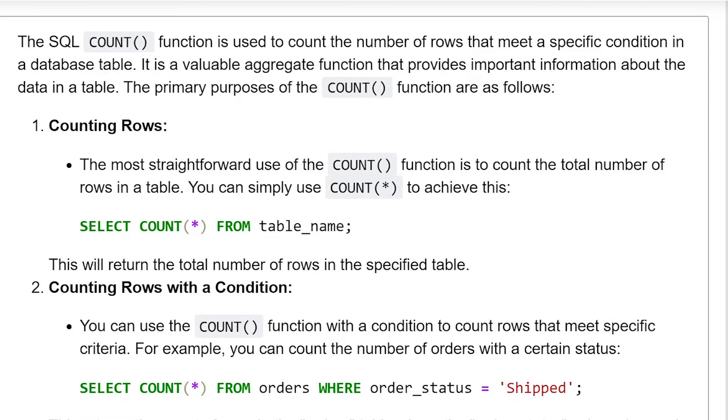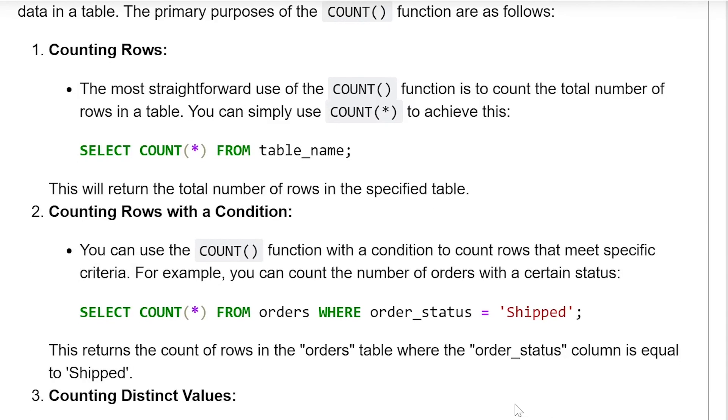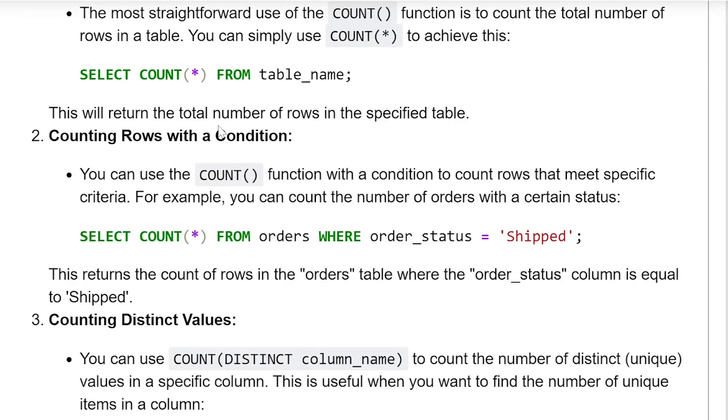Counting rows. The most straightforward use of the count function is to count the total number of rows in a table. You can simply use count star to achieve this. Select count star from table name. This will return the total number of rows in a specified table.